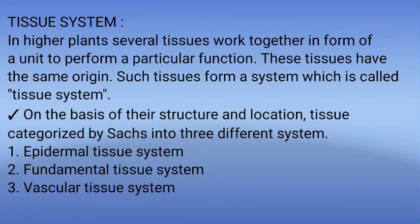Tissue systems are three types: number 1, epidermal tissue system; number 2, fundamental or ground tissue system; and number 3, vascular tissue system.